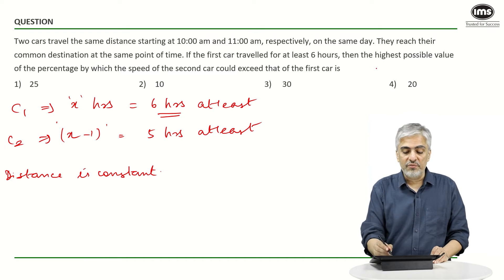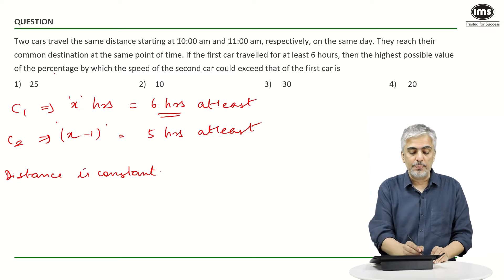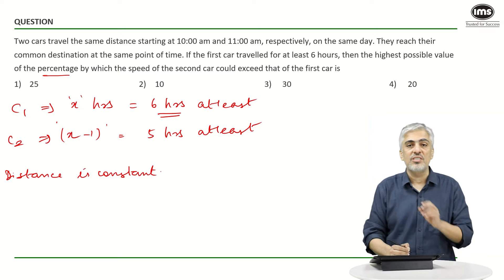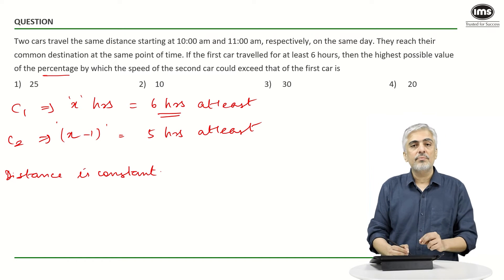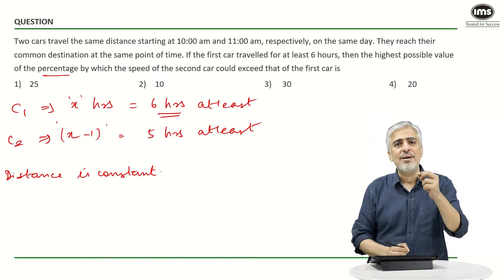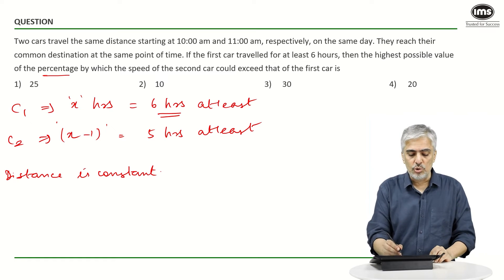What is the question asked then? Find the highest possible value of the percentage by which the speed of the second car exceeds that of the first car. Now if I assume these times are six and five, first let's assume...